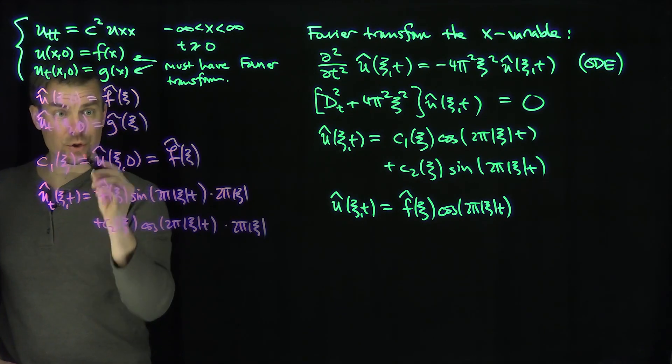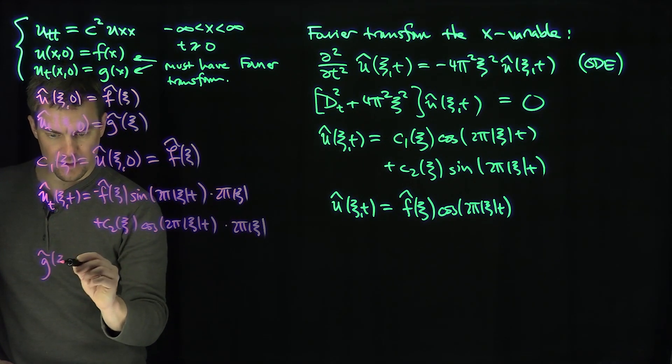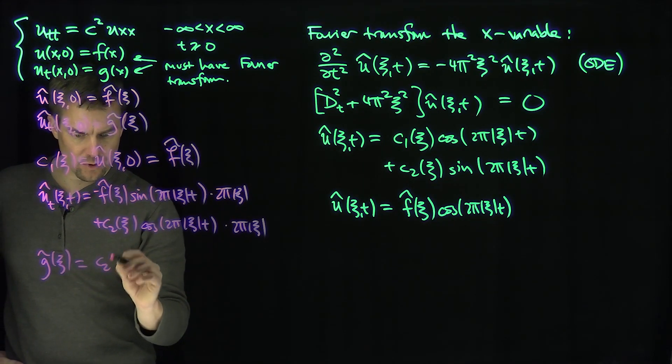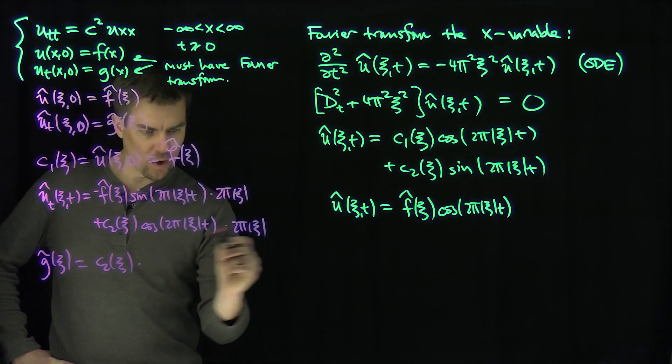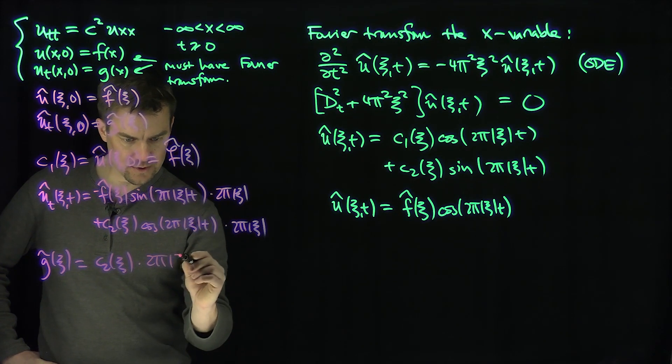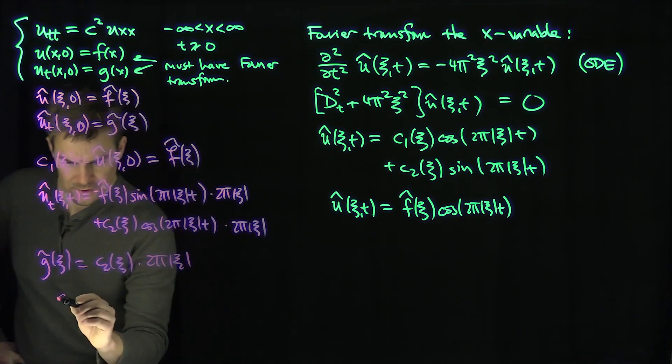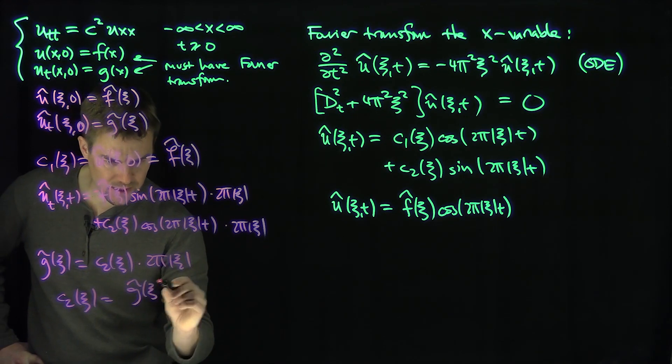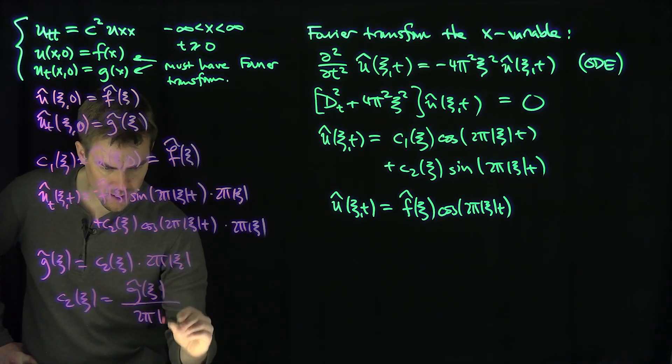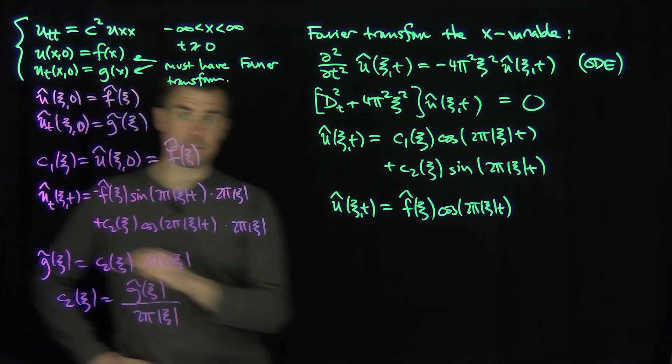So when I plug in zero this, the sine is going to go away. So I know that g hat of xc is going to be c2 xc times what? This is going to be c2 xc. It's going to be a 1 times 2 pi modulus xc. So therefore c2 of xc is really g hat of xc over 2 pi modulus xc. Excellent.